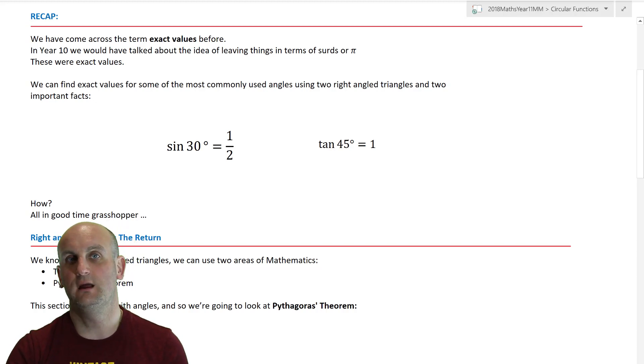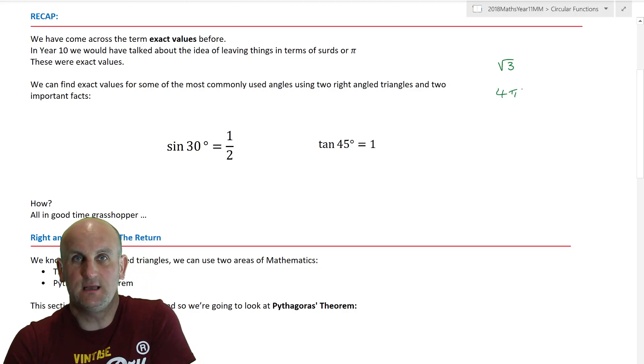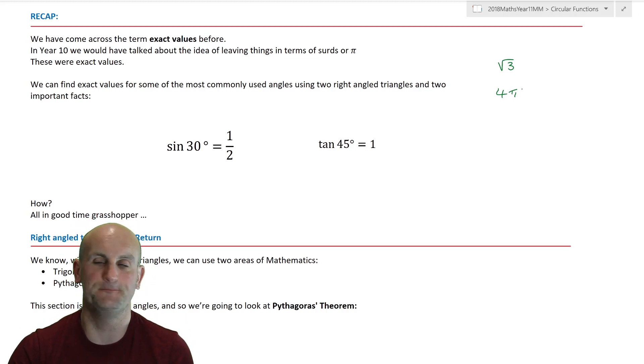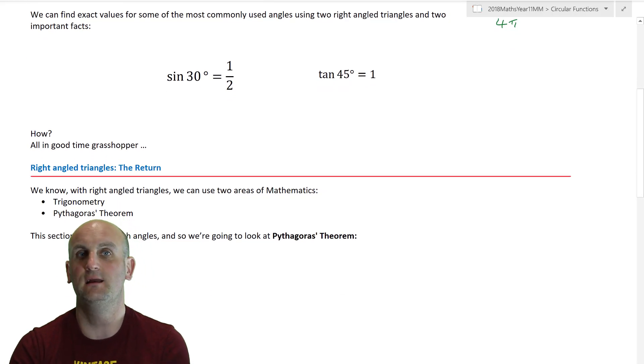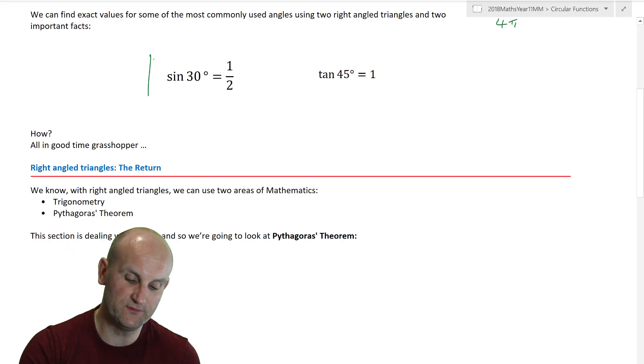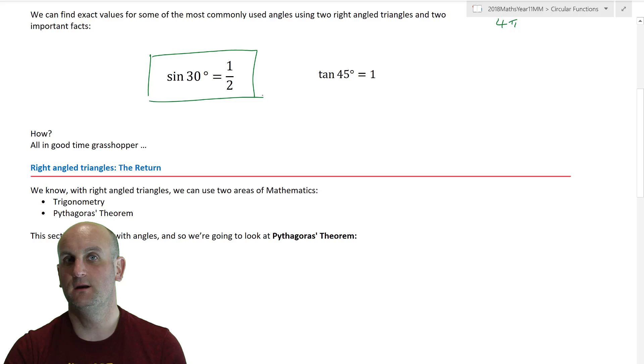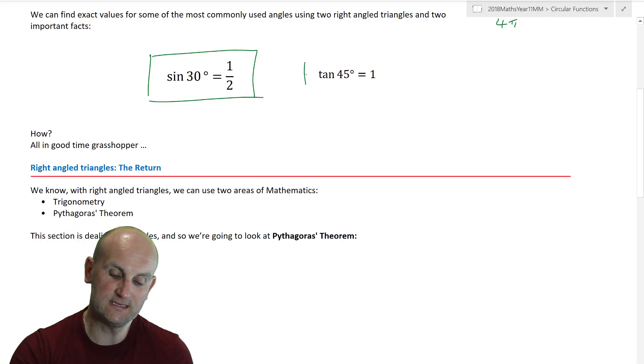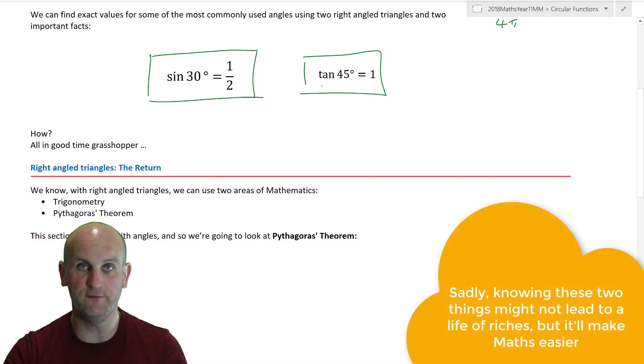So we're going to spend the lesson covering the stuff above me, dealing with exact values and how to find the common angles of 30, 45 and 60 degrees. Know how to construct triangles that can help you and know how to apply the theory to some questions. Now you've met exact values before, and generally speaking in year 9 or year 10, you had these ideas where we could express answers as the square root of 3 or 4 pi.